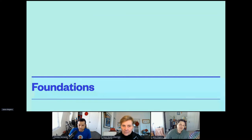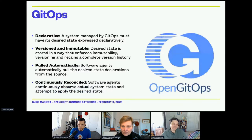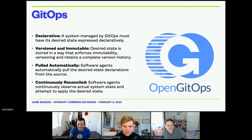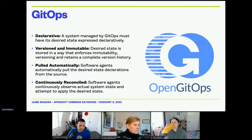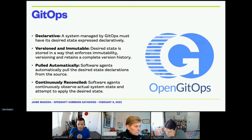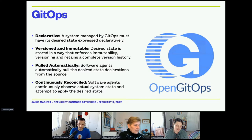A little bit about the foundations. GitOps — this is the definition from OpenGitOps — is declarative, versioned, and immutable. It's pulled automatically and is continuously reconciled. All four of those components together are necessary to really get the full advantages of GitOps.